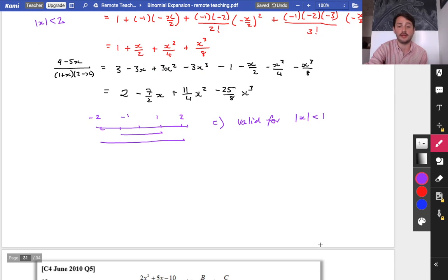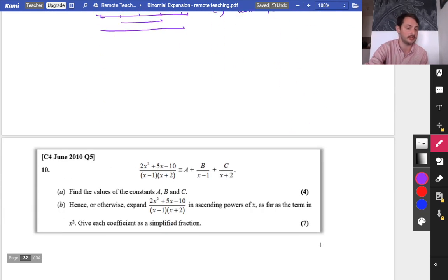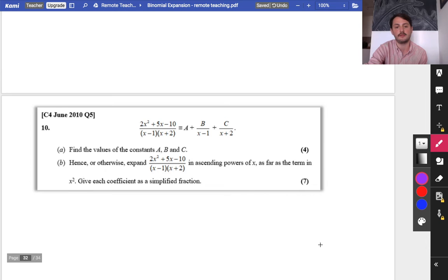So the marks you would get for this are for finding out the validity of this and this. So for part c, valid for x being less than 1 for that particular one that we did here, just because of the way that the expansions worked. Say the range of values which the expansion is valid, valid for x being less than 1. So that's all that's new there. I am just going to do one exam question, and then that is us finished.